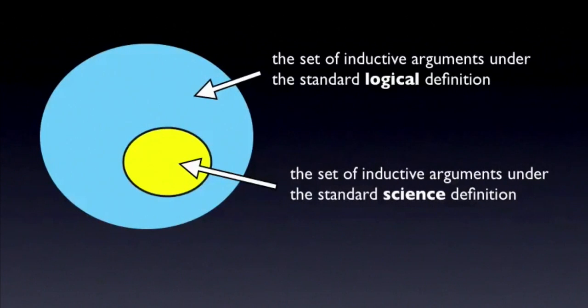The relationship between the two definitions looks like this. The arguments that qualify as inductive under the standard science definition are a subset of the arguments that qualify as inductive under the standard logical definition. So from a logical point of view, there's no problem with calling an inference from the particular to the general an inductive argument, since all such arguments satisfy the basic logical definition. But scientists are sometimes confused when they see the term induction used to describe other forms of reasoning than the ones that they normally associate with inductive inferences. There shouldn't be any confusion as long as you keep the two senses in mind, and distinguish them when it's appropriate.